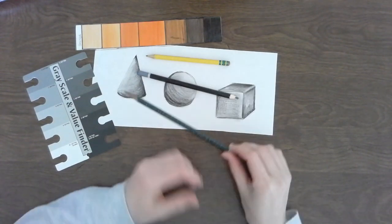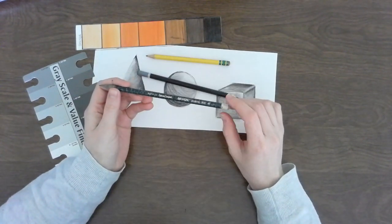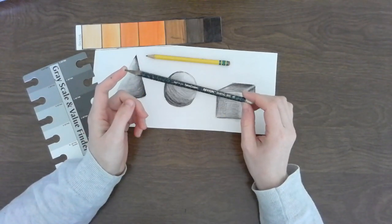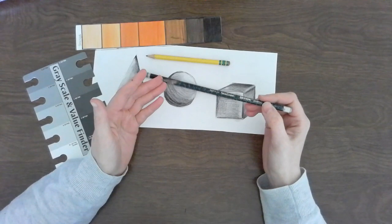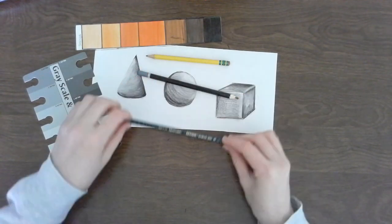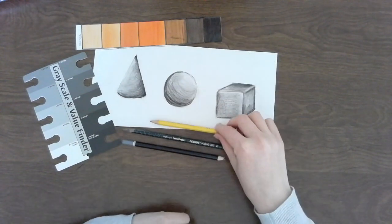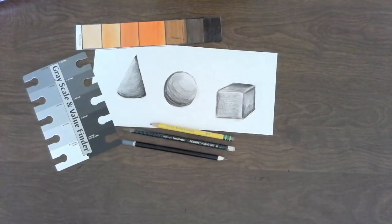On the other end of the spectrum, this one here is a 4H, which means the pencil lead inside is really hard and it makes very light lines when you draw. All of these are great tools that artists use when they're adding value to their 3D shapes.